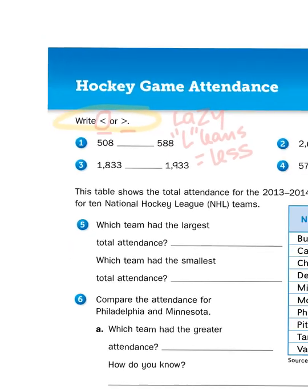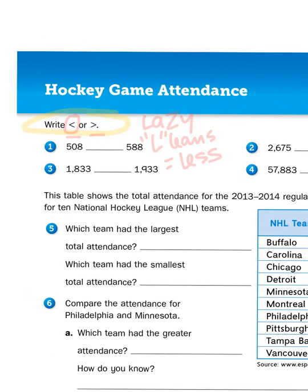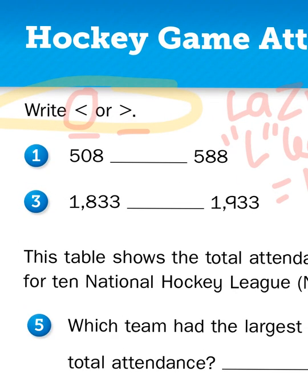Let's take a look at the first problem: 508 is blank compared to 588. The way we go about doing this is we start with the largest place value and compare. There's a 5 in the hundreds place in both numbers. In the second place value, I've got a 0 here but an 8 over there. 8 is obviously bigger than 0, so that makes 588 bigger. So I would write: 508 is less than 588.